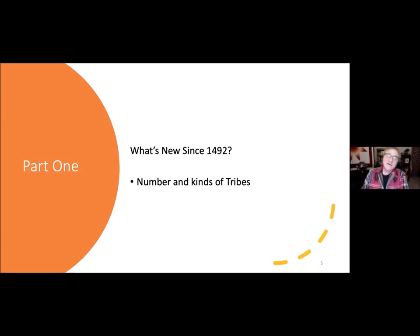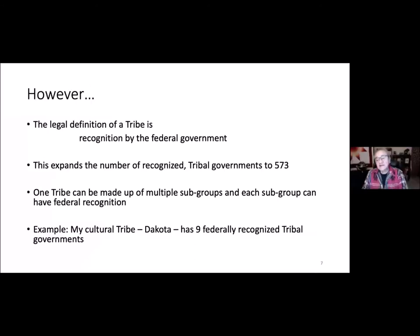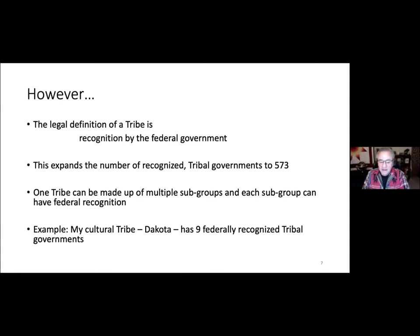What's new since 1492? Number and kinds of tribes. Culturally, there are about 300 tribes in America, which can be studied by dividing them into eight geographic groups called cultural study areas, or CSAs. However, the legal definition of a tribe requires federal recognition, and when you use that definition you expand the number to 573 tribes, because one tribe can be made up of multiple subgroups, each with federal recognition and considered a separate tribal government.